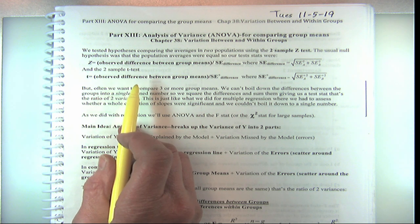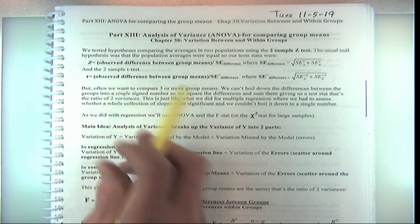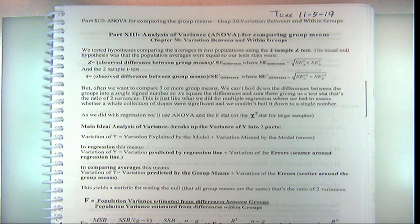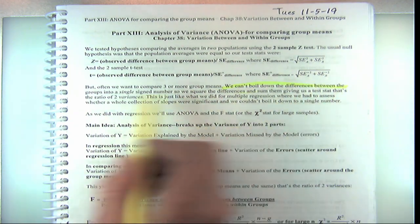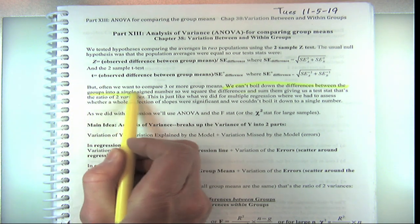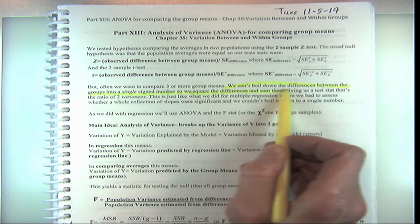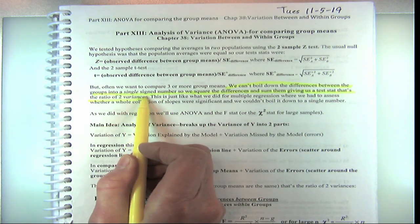One thing I've been looking at is whether freshmen, sophomores, juniors, and seniors have any difference in the group means between their exam scores. Then I have four group means that I want to compare. The problem is we can't boil down the difference between more than two groups into a single signed number. So what do we always do when we want to look at a whole pattern? We square the differences and sum them up, and we get the test statistic — the ratio of two variances, the F ratio.